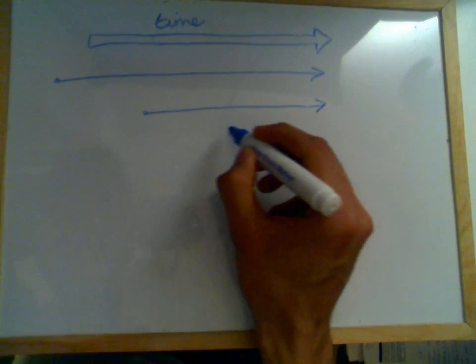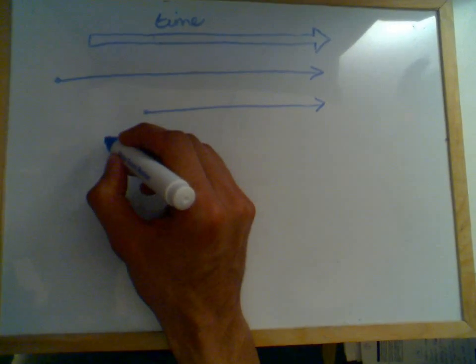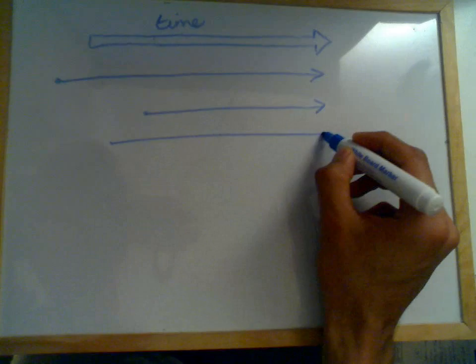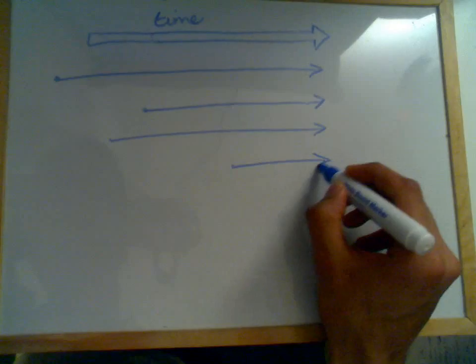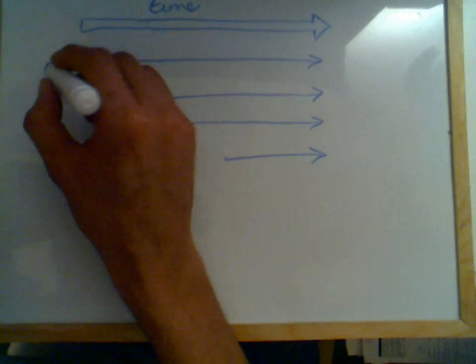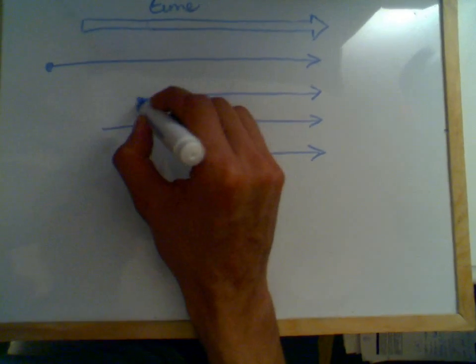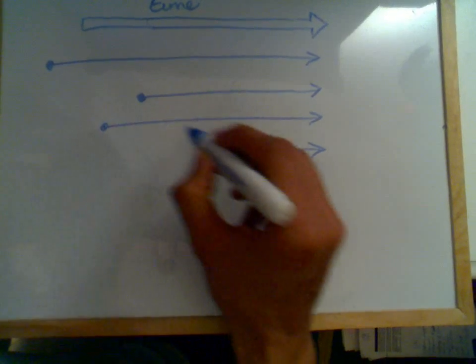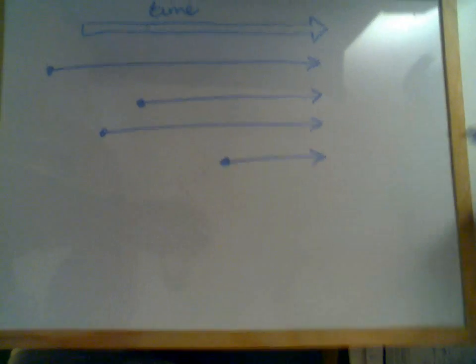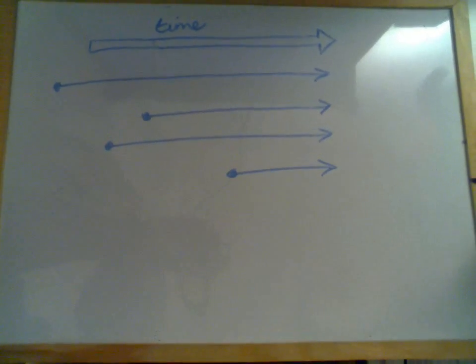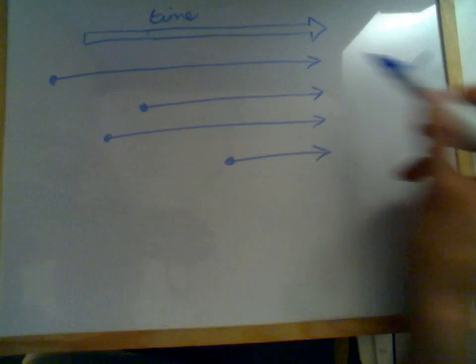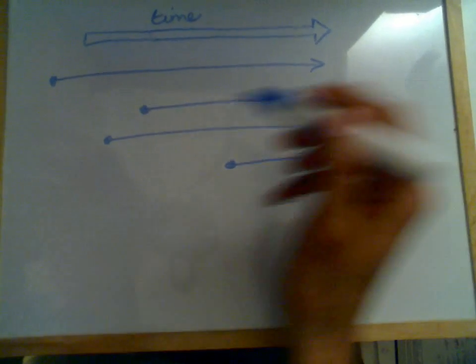Someone else might manifest the disease at this point in time and they're going to have it throughout. Some person might manifest it here and have it throughout, and so on and so forth. So you see the dots represent people when they contract the disease, infection, or when they first present as having the disease.